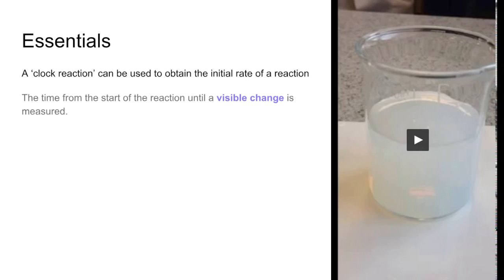Quick revision video on clock reactions. We'll start with some essentials and then look at a question. A clock reaction can be used to obtain the initial rate of a reaction. The time from the start of a reaction until there's a visible change is measured.